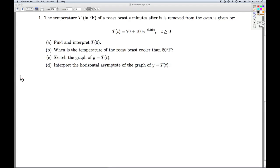Alright, in Part B, we're asked to find when the temperature of the roast beast is cooler than 80 degrees Fahrenheit. The temperature is given by this function. So we're trying to find when this is less than or equal to 80. So we substitute in the formula for big T of little t.